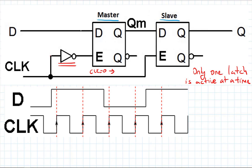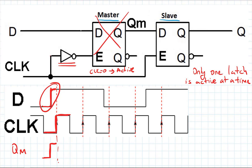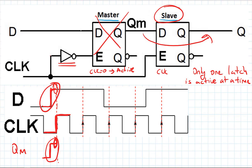This is a positive edge triggered flip flop. When the clock is zero, the master latch is active, so the D value is copied to QM. When the clock is one, the master latch is disabled and the slave latch is enabled. The last value of QM, which corresponds to the last value of D just before the rising edge, is transferred to the output. The slave is active when the clock is one.